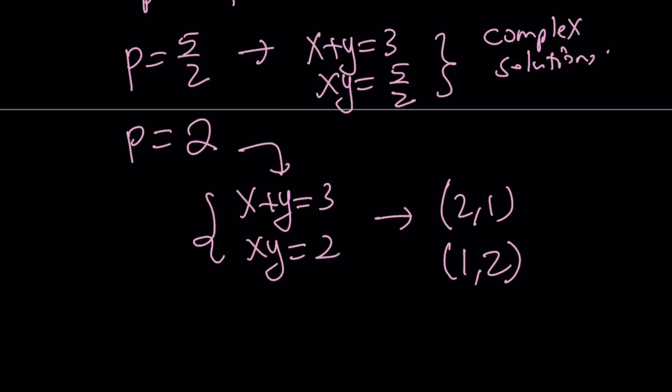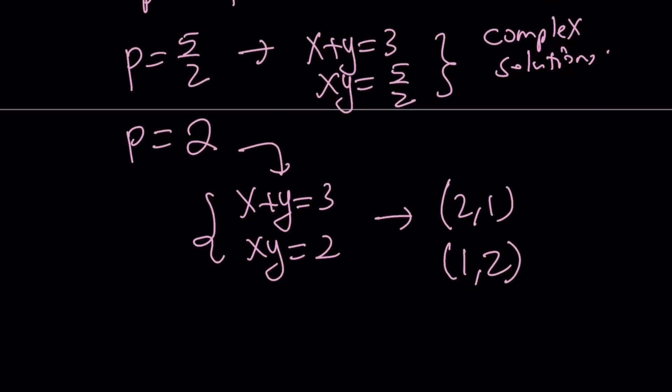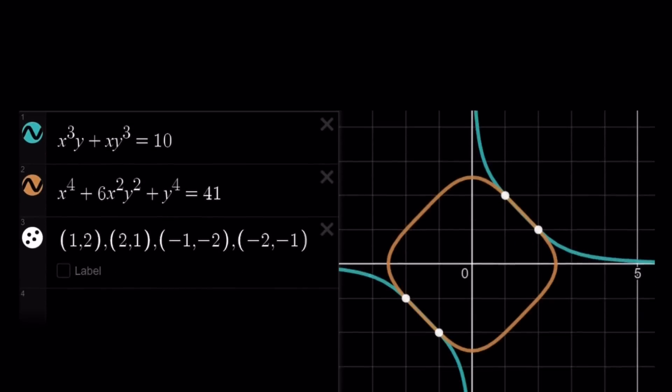For the complex solutions, this is what you can do. You can kind of form an equation whose solutions are x and y. So, kind of like t squared minus. And using the Vietas formulas, this turns into t squared minus 3t plus 5 half equals 0. And if you look at the discriminant, you're going to get a negative discriminant from here, which means you're going to get complex solutions. Let's go ahead and take a look at the graph of this because it's really cool.